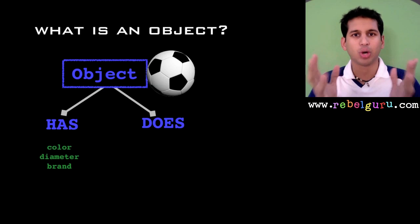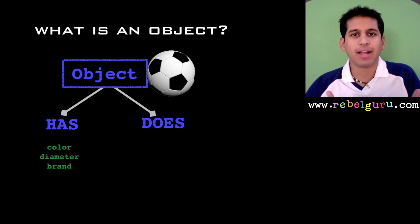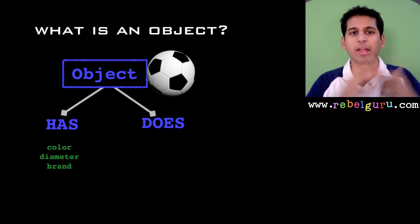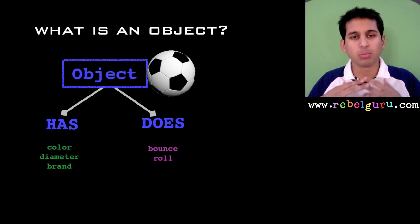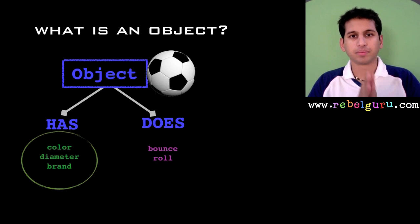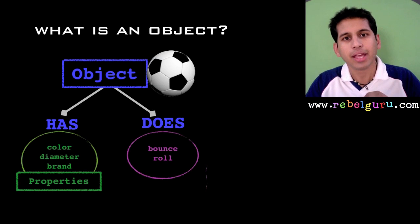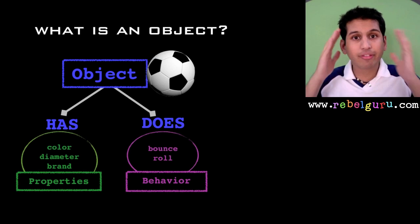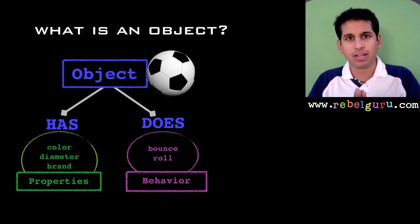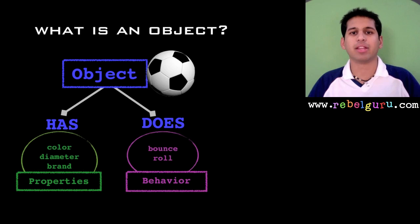These three properties describe this football. The color is obvious, diameter is a measure of the size, and the brand - Nike, Adidas, whoever made the ball. What does this football do? This football can bounce, this football can roll. So I've described the behavior of the football. With the properties and the behavior I have completely described this ball object. Now if in my object-oriented solution at a high level I was designing a ball, this is how I would do it - just write it in plain English, that's it.